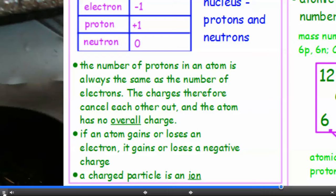And if you remember, the number of protons in an atom is always the same as the number of electrons. So the charges therefore cancel each other out, and the atom has no overall charge. If an atom gains or loses an electron, then it gains or loses a negative charge, and we call a charged particle an ion.